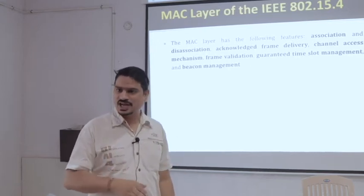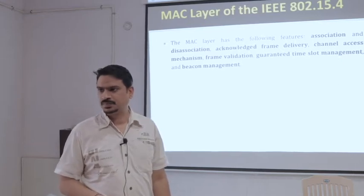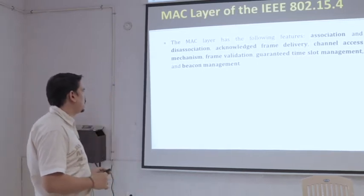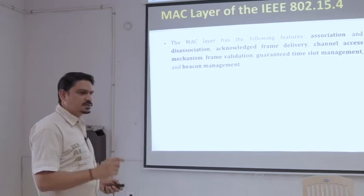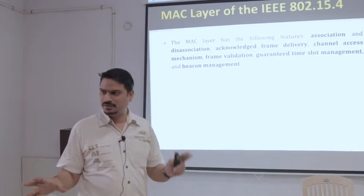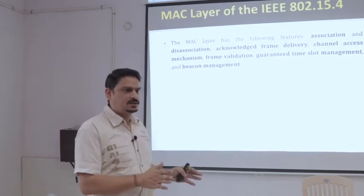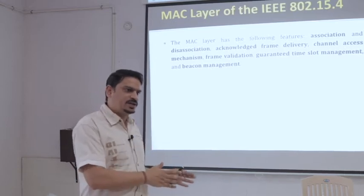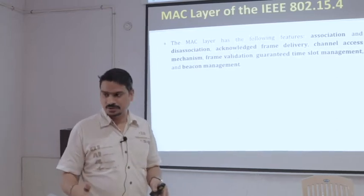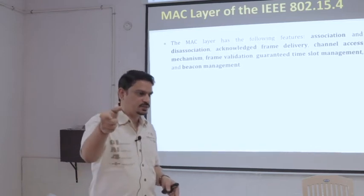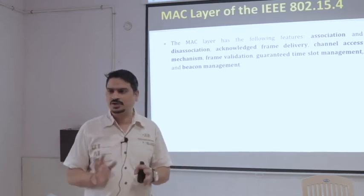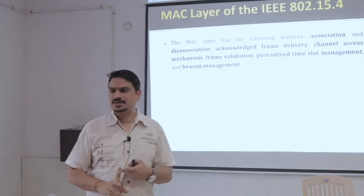Every node will access the channel in that particular way. Frame validation — how many frames we are sending and receiving — has to be validated by the MAC. Guaranteed time slot management means the slots are divided so there will be a sleep period and an active period. Active is again divided into receive and send: 5 seconds fully receiving, 5 seconds fully sending. That 5-second window is the guaranteed time slot, and it should be matched with the receiver's timing. This is where time synchronization also comes into the picture.